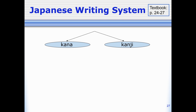There are two different main kinds of Japanese writing. The first one is called kana. These are letters used to represent sounds — they make sounds like a, ka, shi, ru, things like that. They don't mean anything by themselves; they just show us how to pronounce something.